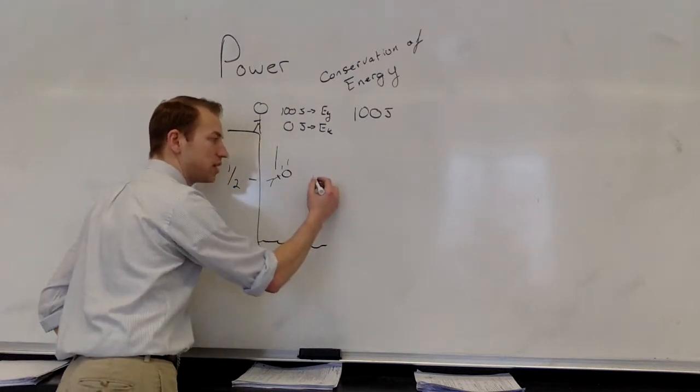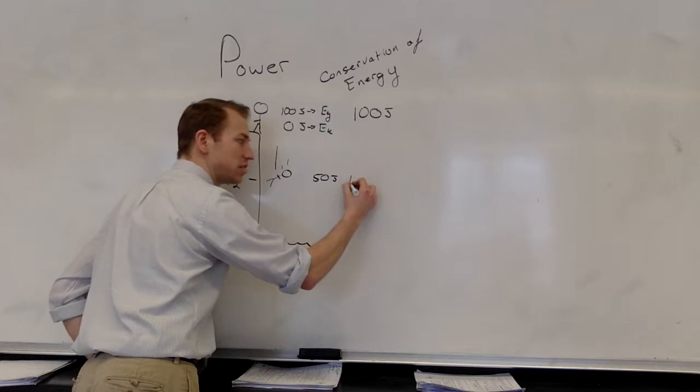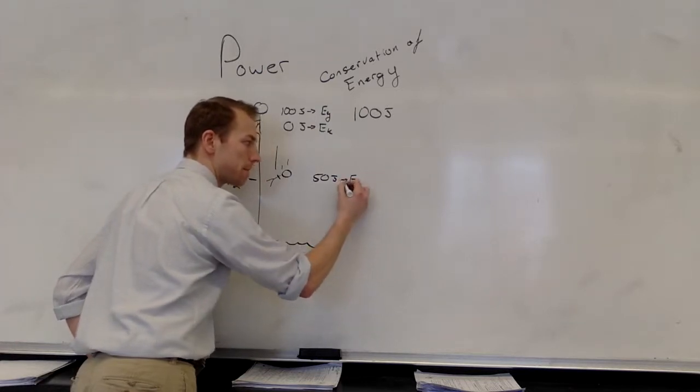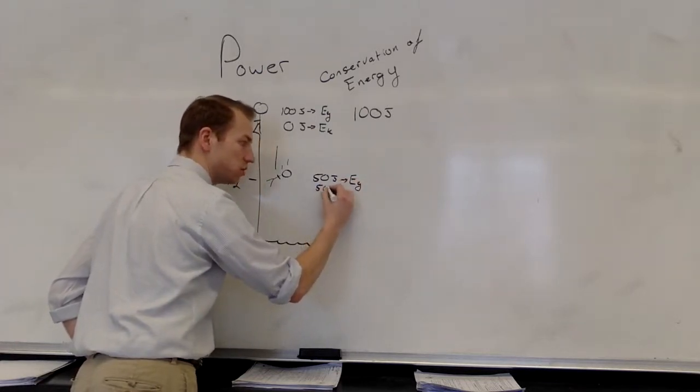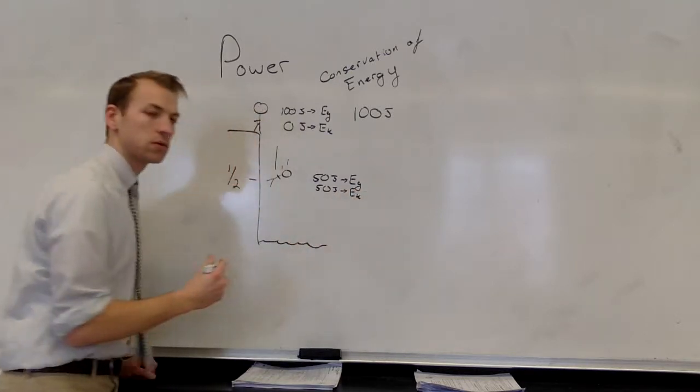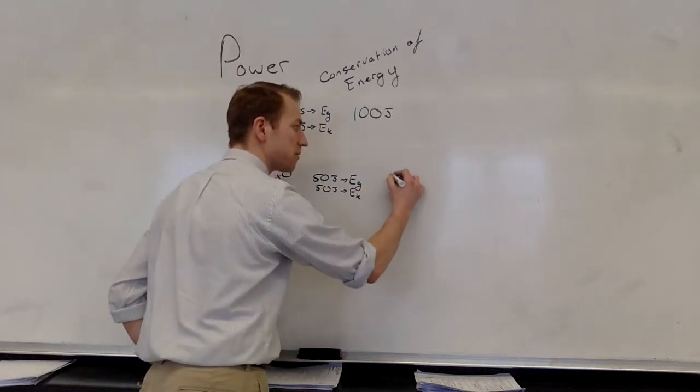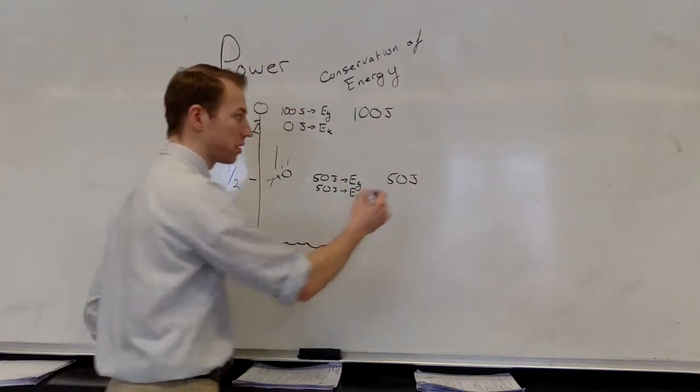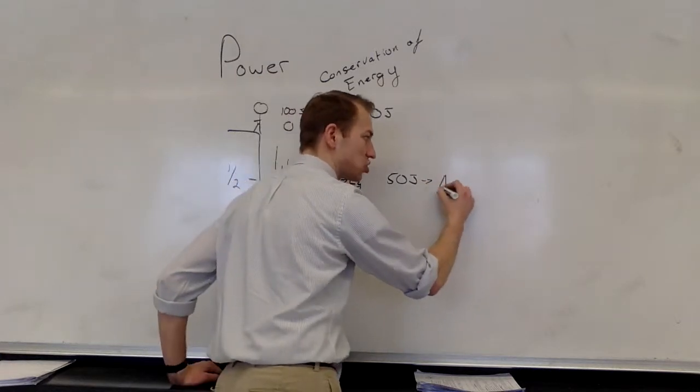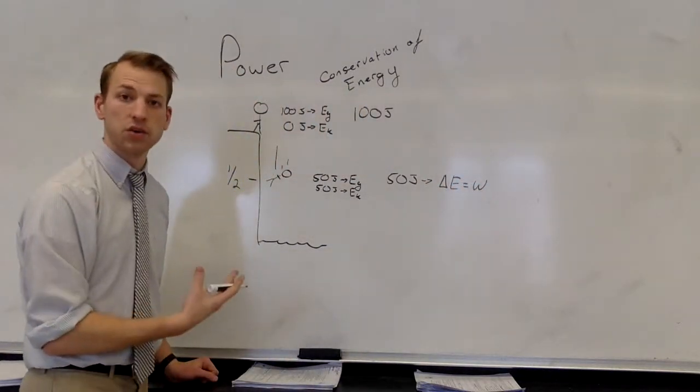If they're about half way down, 50 joules of gravitational energy and 50 joules of kinetic energy. So gravity has done by this point 50 joules worth of energy and we can say that that is the change in energy which is equal to work. So far so good? I hope so because you can't really answer and even if you had a question I can't answer that question.